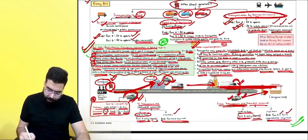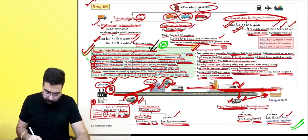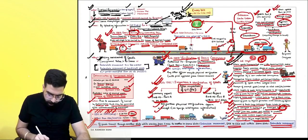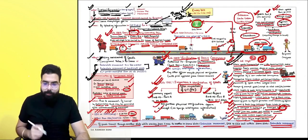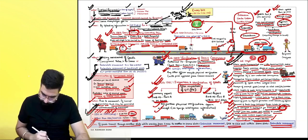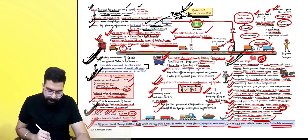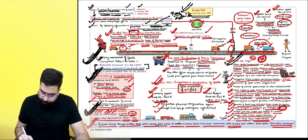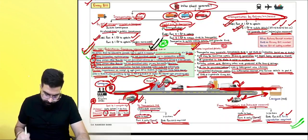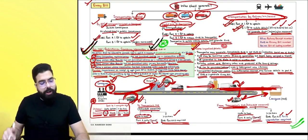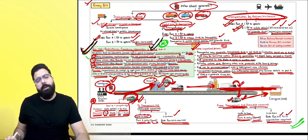That completes the revision of the e-way bill chapter. It is an important chapter because of the amendment. Key points to remember: when e-way bill is not required, how to determine consignment value, validity of e-way bill, when e-way bill is required, how to calculate validity, and Rule 138E.